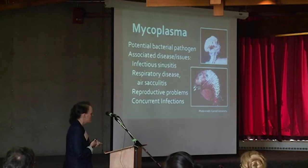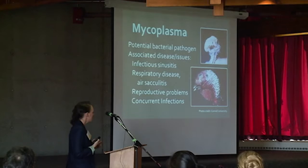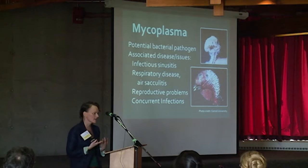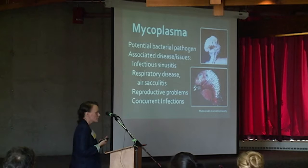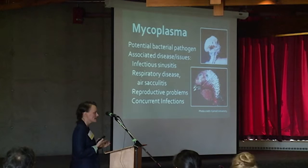Mycoplasma is a bacterial pathogen that can cause the disease mycoplasmosis. The infections aren't always apparent; however, sinusitis, air sacculitis, and reproductive problems can occur, and there are often co-infections with other pathogenic bacteria. For commercial or domestic poultry, the main mycoplasmas of concern are Gallisepticum, Meleagridis, and Synoviae, which have been known to cause great economic losses in the past.